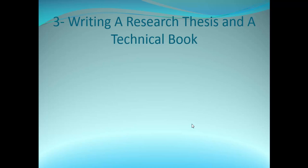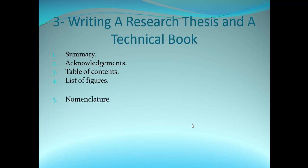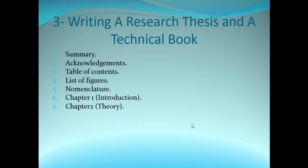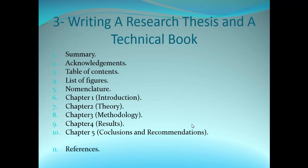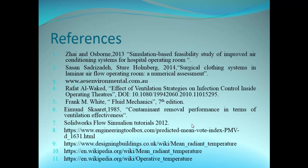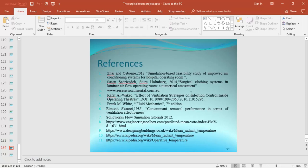For a thesis or technical book, the structure starts with the summary, acknowledgements, table of contents, list of figures, nomenclature, then chapters one through five, and finally references and appendix.